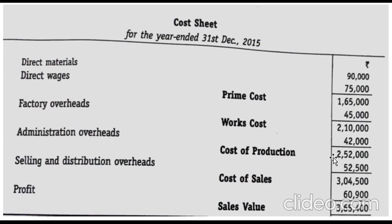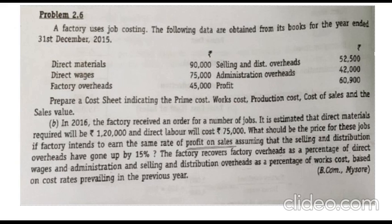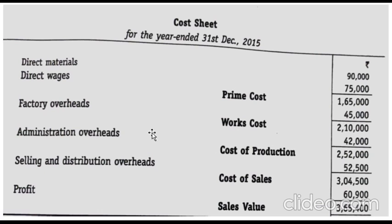After cost of production we find selling and distribution expenses. From the question, selling and distribution overhead is 52,500. Cost of production 2,52,000 plus selling and distribution overhead 52,500 gives cost of sales of 3,04,500.